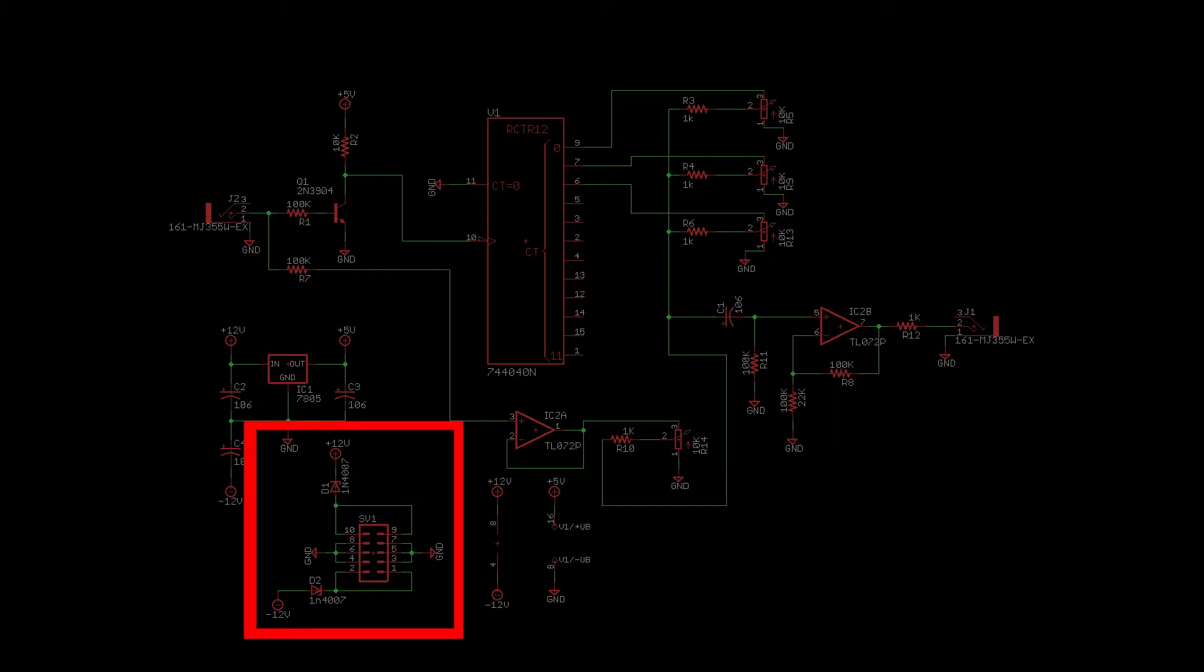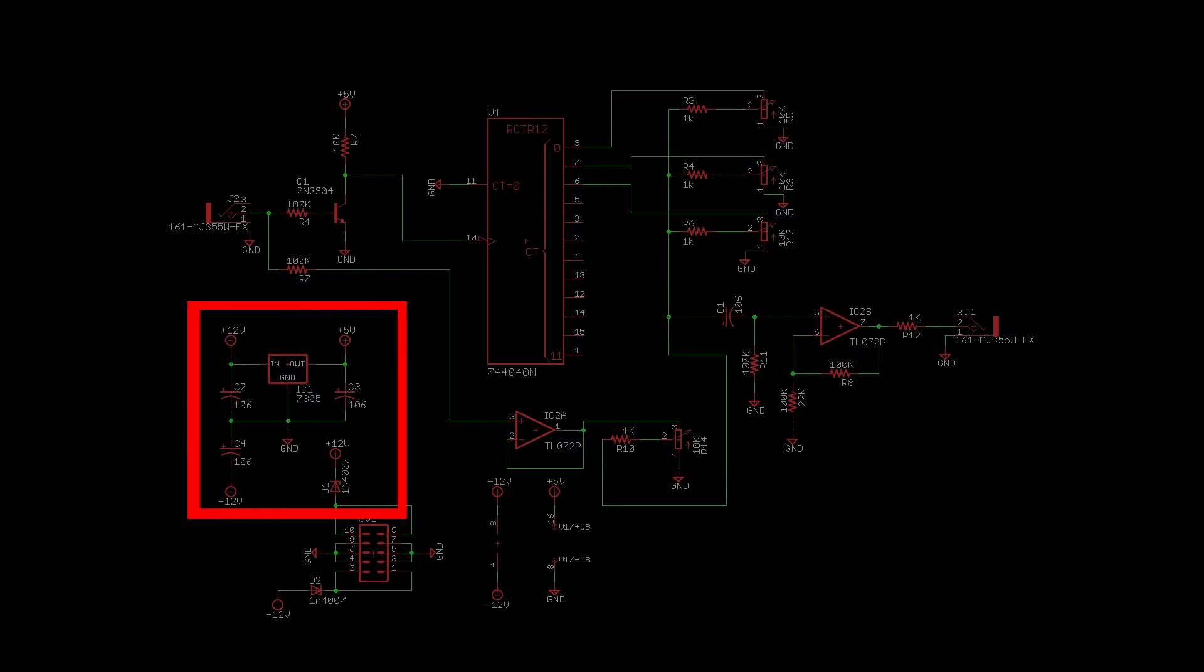Power comes into the board through this connector, and the 7805 chip regulates the plus 12 volts down to the 5 volts required by the 40-40 chip. Now let's build it.